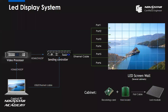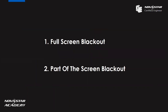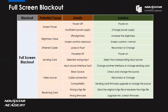All these factors can be possible reasons that cause the blackout issue. The blackout issue can be divided into two situations: full screen blackout and part of the screen blackout. Let's check them one by one. For the full screen blackout, we have a table to help understand the issue. We can see potential causes, details, and solutions. For the full screen blackout issue, we can check six areas: screen power, brightness value, Ethernet cable, sending card, video source, and the receiving card.